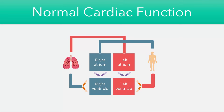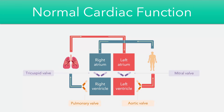The right side of the heart pumps deoxygenated blood to the lungs, and then oxygenated blood returns to the left side where it's pumped to the rest of the body via the aorta. You can see that this forms a double circulation system. We also have valves between different parts of the heart, such as the atrioventricular valves and the semilunar valves, which help to control the flow of blood.